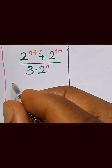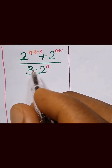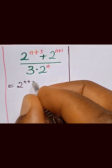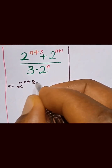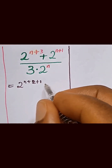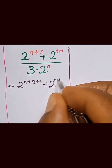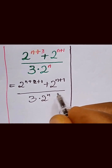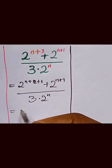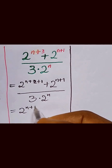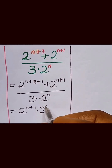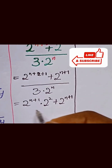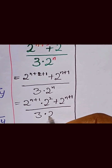The next step of this expression becomes equal to 2 raised to power n plus 2 plus 1, and this will be added to 2 raised to power n plus 1 over 3, multiplied by 2 raised to power n. This can be written as 2 raised to power n plus 1, multiplied by 2 raised to power 2, plus 2 raised to power n plus 1 over 3, multiplied by 2 raised to power n.